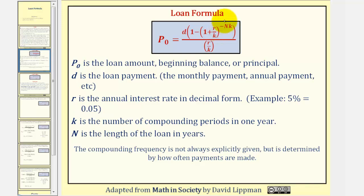So here is the loan formula, which again is the same as the payout annuity formula, where P₀ is the loan amount or beginning balance or principal. D is the loan payment or the payment per unit of time. R is the annual interest rate expressed as a decimal. K is the number of compounding periods in one year. Notice K appears three times in the formula. And N is the length of the loan in years. Now the compounding frequency is not always explicitly given, but can be determined by how often payments are made.